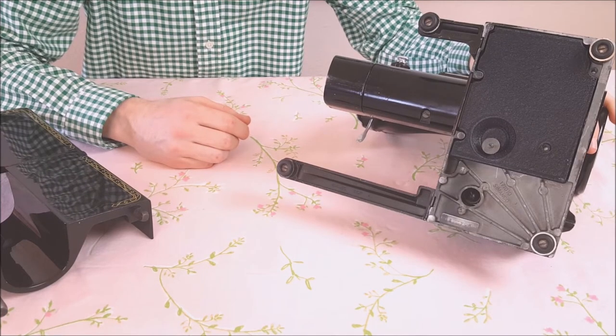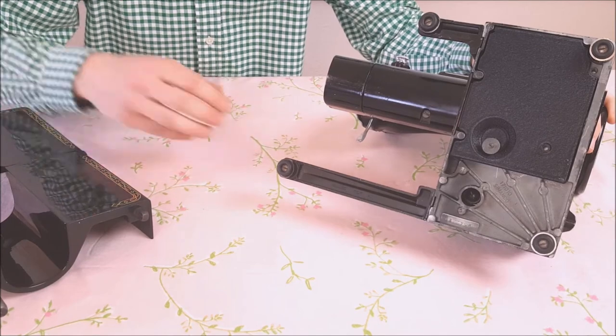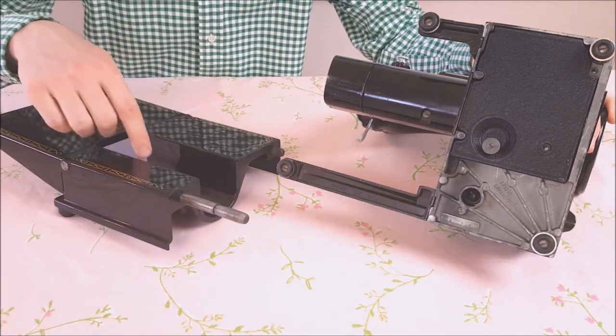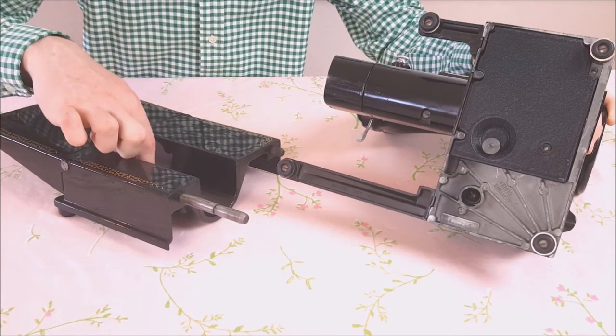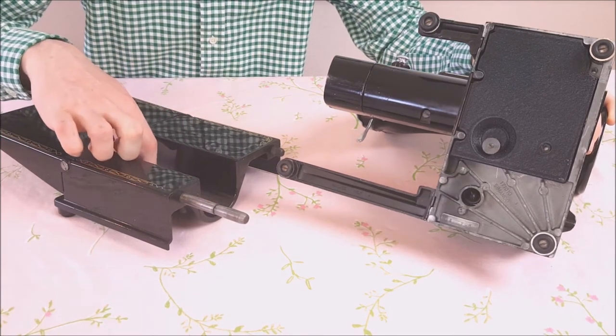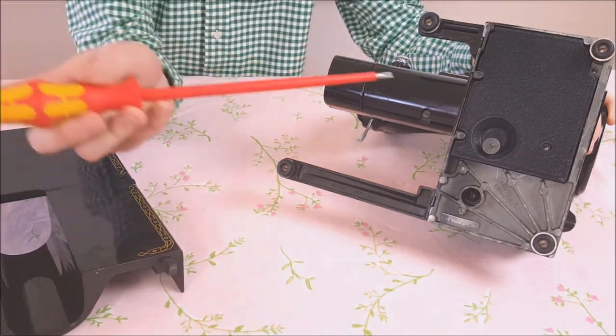If that screw ever becomes loosened in sewing when the machine is vibrating that screw will drop down and when you try to pull the bed off in any way it will be really hard and it will leave a gouge right here. So we want to make sure that screw is always tight.